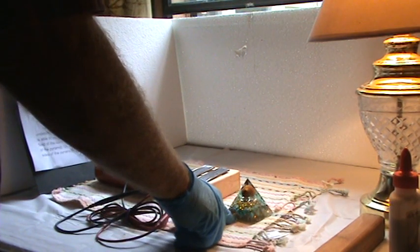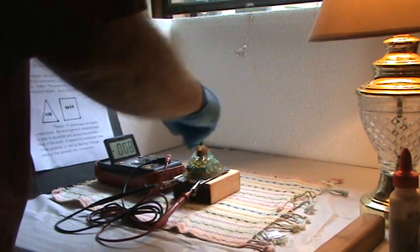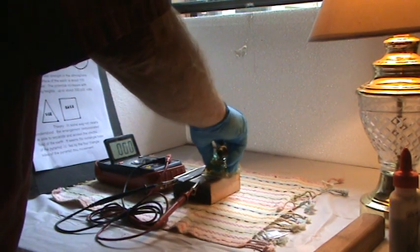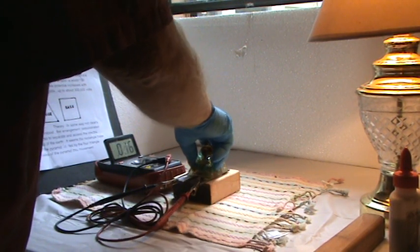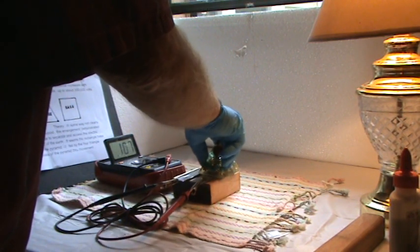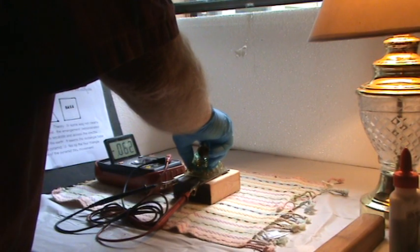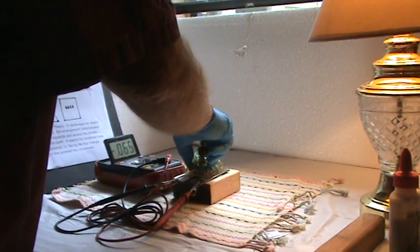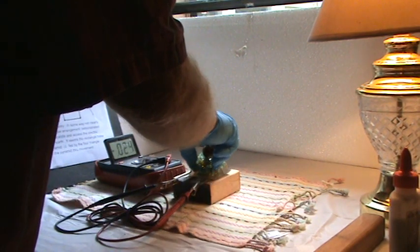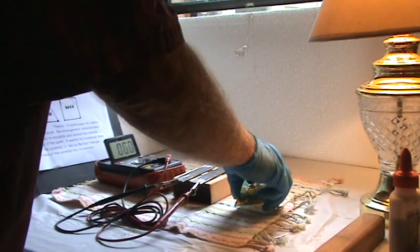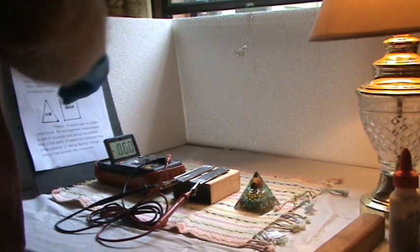Now we're going to access the readings on the base of the pyramid. This is where I believe the power and the electric field is being generated. There's 48, 50, 80, 60s, 70s, 112. 100 and something, 150, 160, 180, 180. So that's quite a jump from just one or two or three up to over 100. That would be millivolts. I'm sorry. Millivolts.